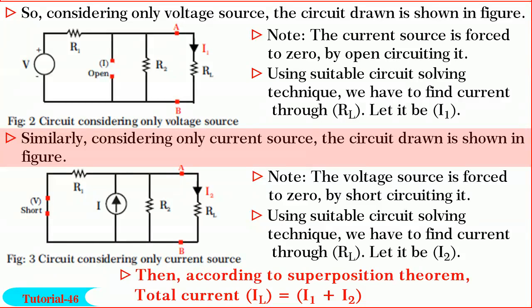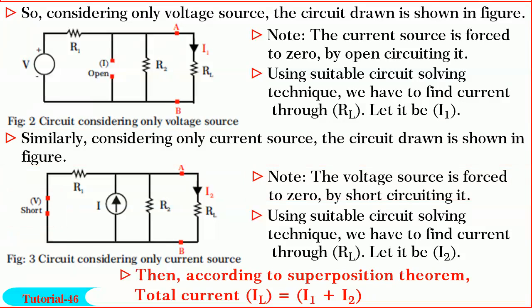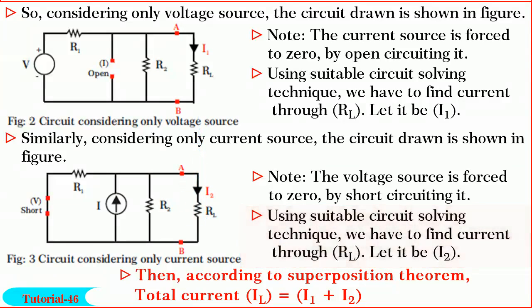Then, according to superposition theorem, the total current IL is equal to I1 plus I2 amperes.